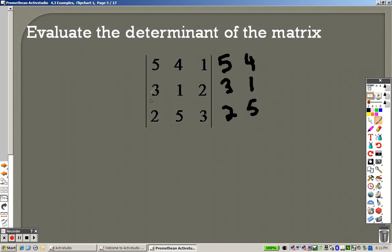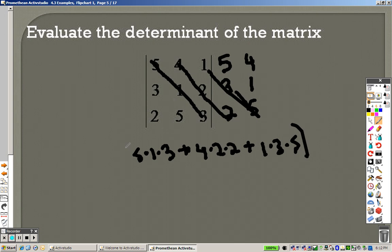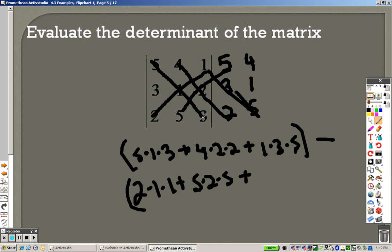So, now it is down 5 times 1 times 3, plus down 4 times 2 times 2, plus down 1 times 3 times 5. So, all of that, you need to find out what all of that is. This gives you 14, plus 16, plus 15.